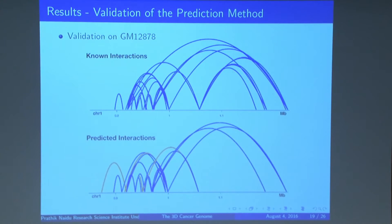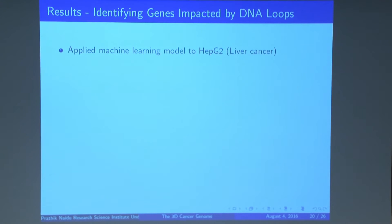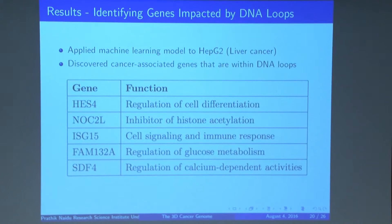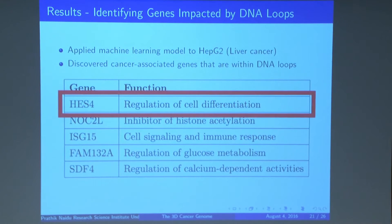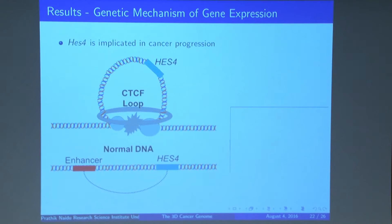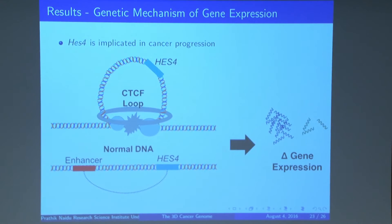Now that we validated our machine learning model's effectiveness, we wanted to apply these models on existing cell lines that don't have enough 3D interaction data. We applied this model to HEPG2, a liver cancer cell line with no 3D interaction data, to identify new genes that could be impacted by these loops. We discovered five cancer-associated genes on chromosome 1 within these DNA loops that have changes in gene expression patterns. In particular, we focused on HES4, a known regulator of cell differentiation. We found that in normal DNA samples, HES4 associates with an enhancer, but in cancer cells, HES4 is within a CTCF loop causing a change in gene expression — determining exactly why HES4 is implicated in cancer progression and suggesting a new genetic mechanism.